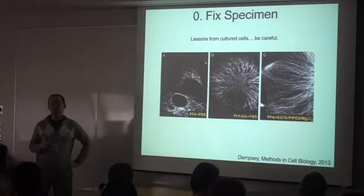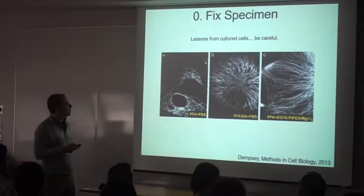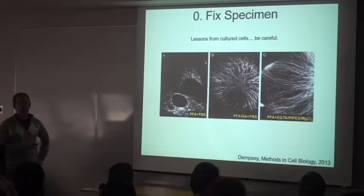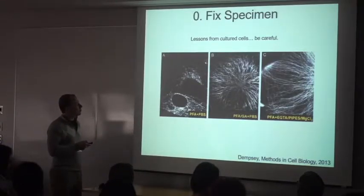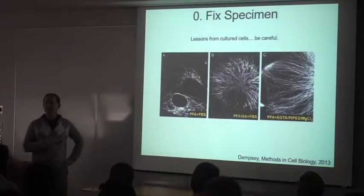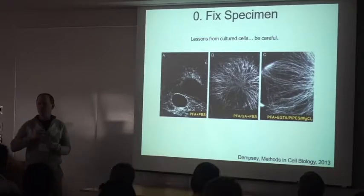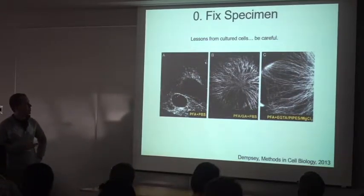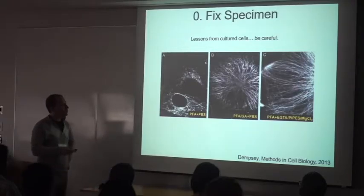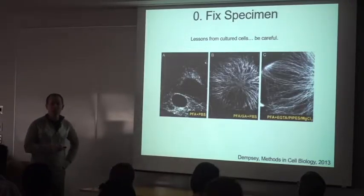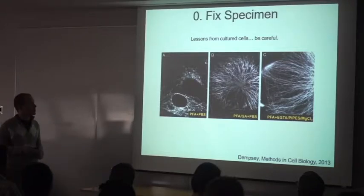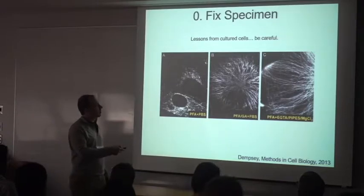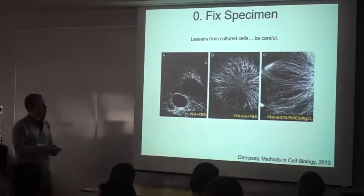Let's talk about fixing the specimen. You want to preserve your structure of interest. This is three types of fixation conditions for microtubules in a cultured kidney cell. Fixed with just formaldehyde, it gets blown up - microtubules are dynamic, they undergo catastrophe. Fixed with glutaraldehyde in the mixture, it's much stronger fixative, microtubules are preserved really well.